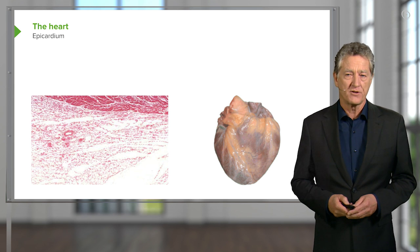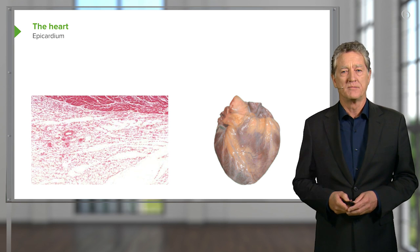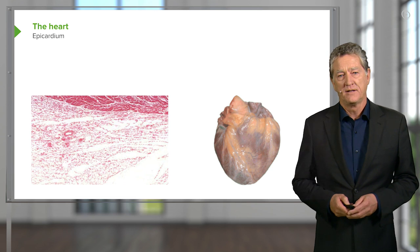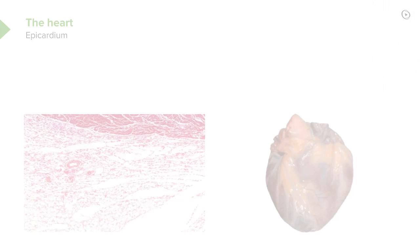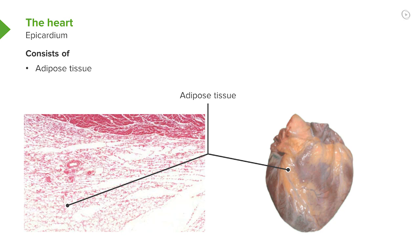Now let's look at those structures in histological detail. First, the epicardium — the covering on the outside of the heart. As you can see from the diagram and from the histological section, it contains a lot of fatty tissue, or adipose tissue.